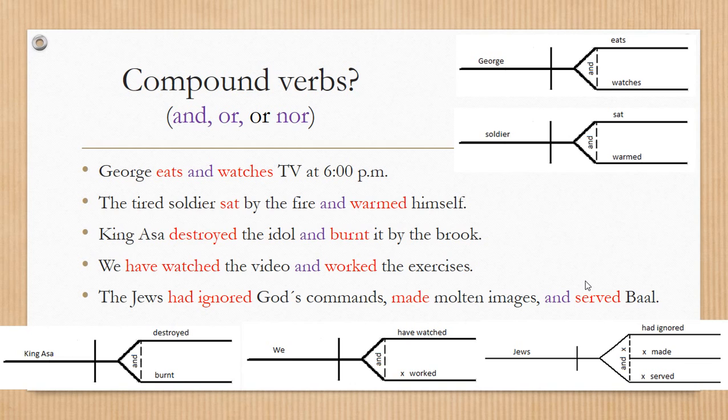The first sentence says George eats and watches TV at 6 p.m. Okay, in the case of the compound verbs, it is just the same as the compound subjects. We use these linked, linking words, these connectors: and, or, or nor.